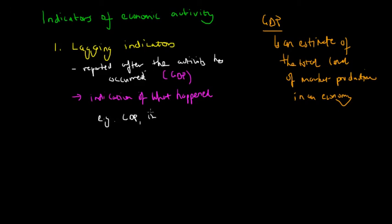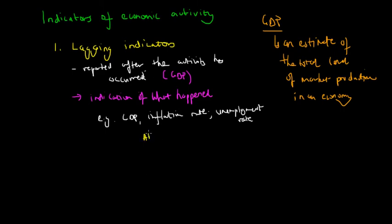Examples of lagging indicators include GDP, the inflation rate, and the unemployment rate. These are processed and released after the occurrence of economic activity — typically released by the ABS, the Australian Bureau of Statistics, three months after it has happened. Lagging indicators don't help us much in improving economic activity directly, but they help us understand what happened previously so we can make better choices in the future.